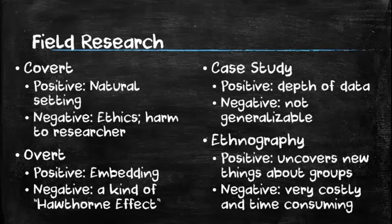Ethnographies are extremely costly and very time-consuming. You actually live with a group and observe all aspects of their daily life for a long period of time. Your research is generally published in book form — two to three hundred pages describing every aspect of that group's social life. One of the positives is that because you're studying a group for so long, they will eventually let their guard down, particularly if they respect what you're doing and develop rapport and trust. You can uncover new things about that group previously unknown in the research community.